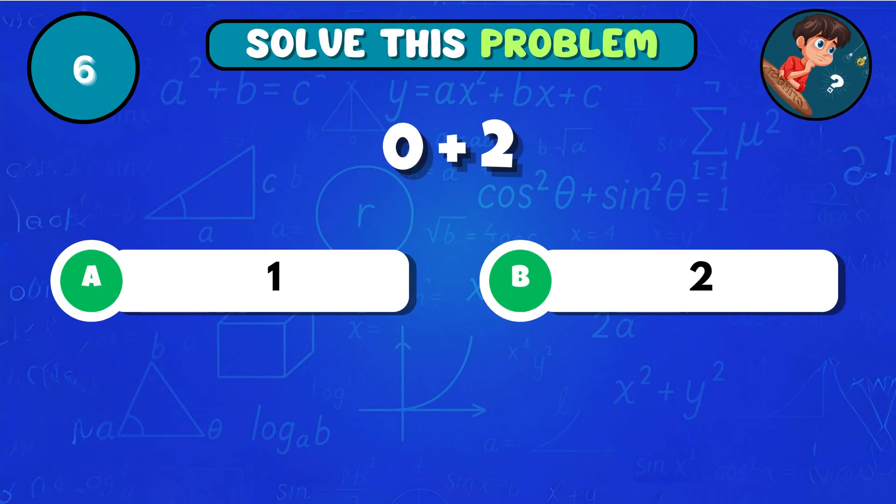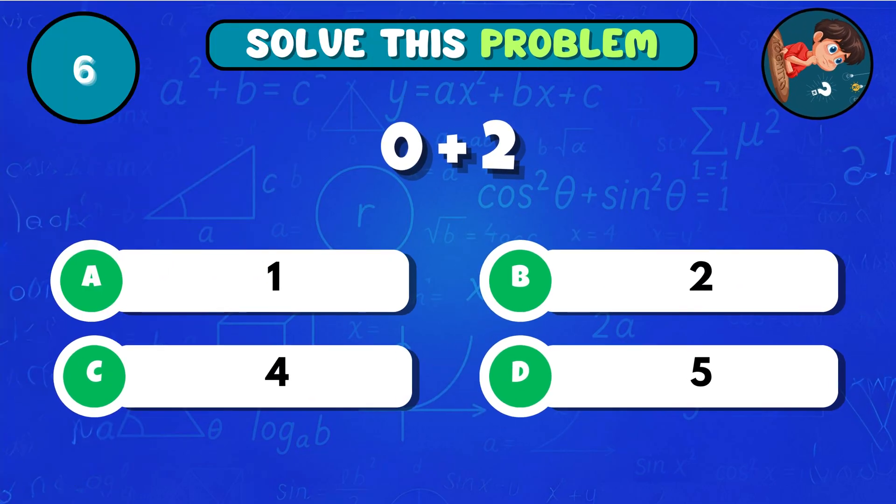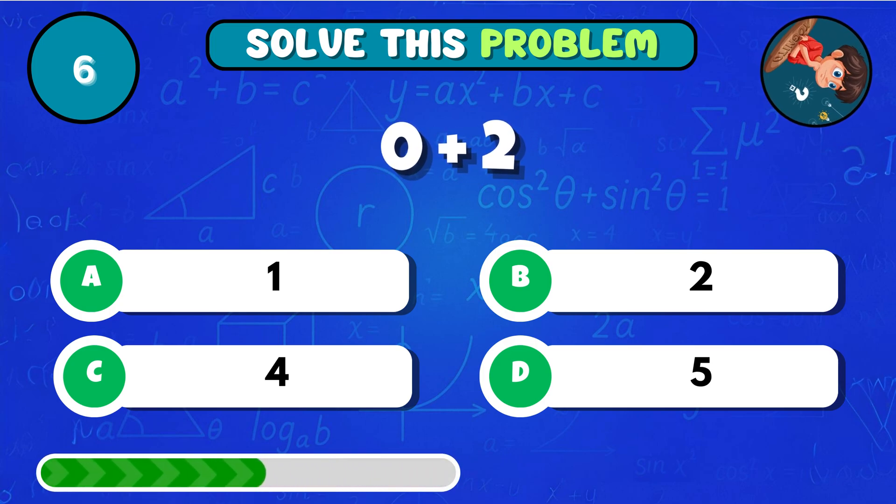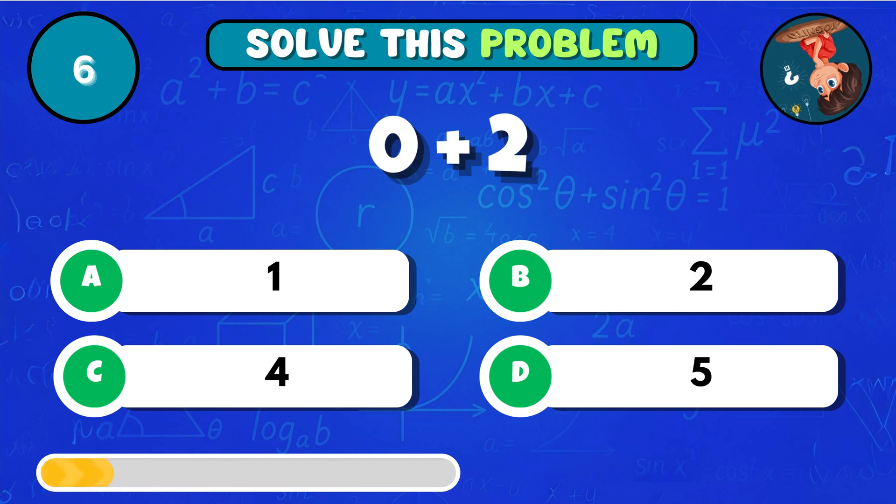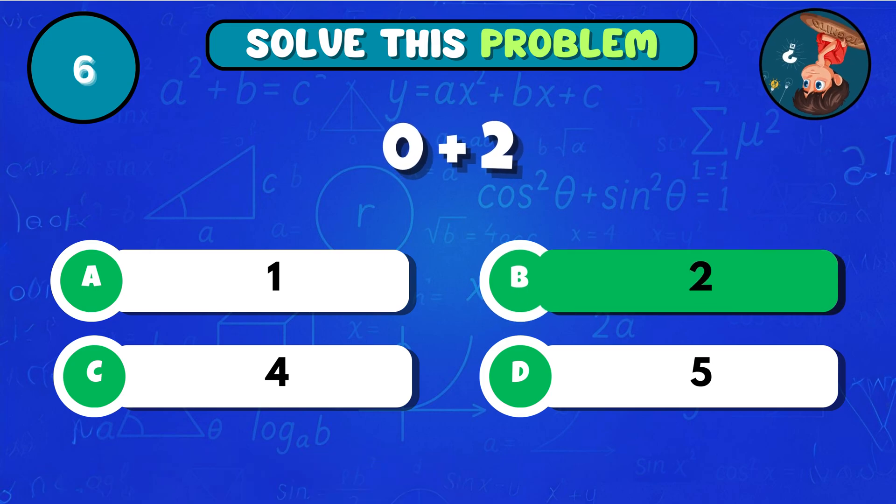What is the sum of 0 and 2? It adds up to B 2!